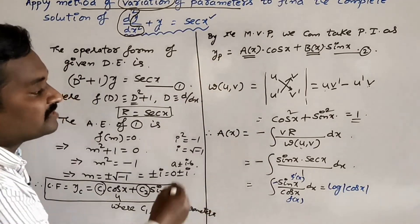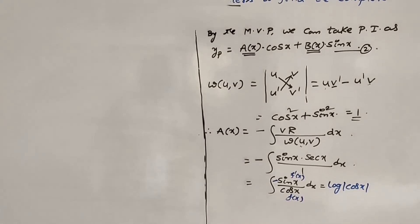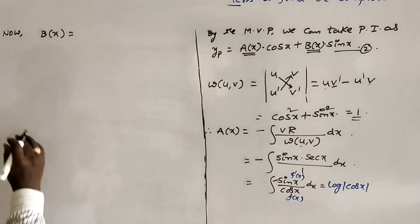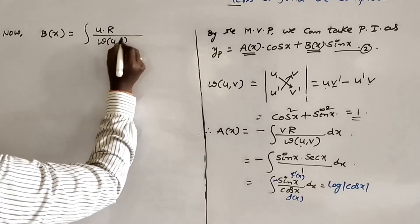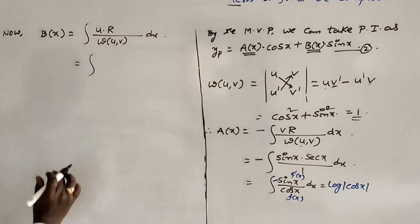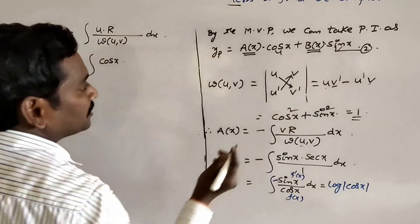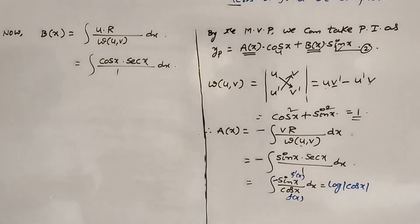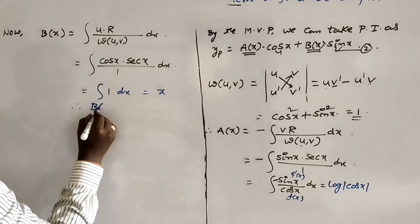Now for b(x), the formula is: b(x) = ∫(u·R / W) dx. Here u = cos(x), R = sec(x) = 1/cos(x), and W = 1. So b(x) = ∫(cos(x)·(1/cos(x))) dx = ∫1 dx = x. Therefore b(x) = x.